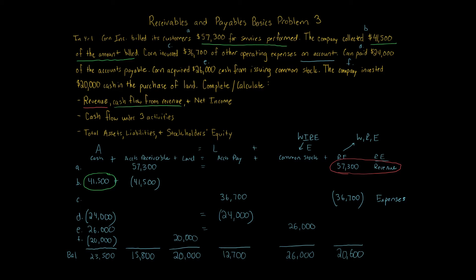Net income is straightforward. Net income equals revenue minus expenses: $57,300 minus $36,700 equals $20,600. Very easy to calculate using the accounting equation.